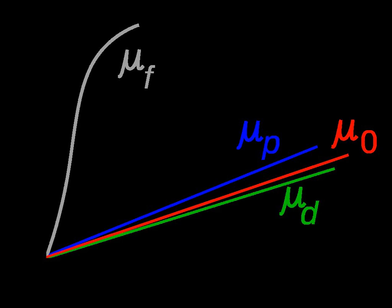Diamagnetism is the property of an object which causes it to create a magnetic field in opposition of an externally applied magnetic field, thus causing a repulsive effect. Specifically, an external magnetic field alters the orbital velocity of electrons around their nuclei, thus changing the magnetic dipole moment in the direction opposing the external field. Diamagnets are materials with a magnetic permeability less than μ0. Consequently, diamagnetism is a form of magnetism that a substance exhibits only in the presence of an externally applied magnetic field. It is generally a quite weak effect in most materials, although superconductors exhibit a strong effect.